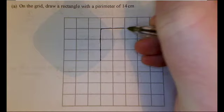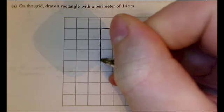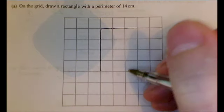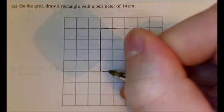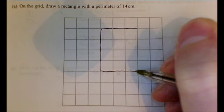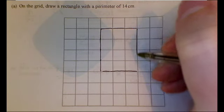So I'm drawing one and one each way, and that's 6. Now if I draw one more, now I've got a 4 and a 3, which makes 7. So if I just make that into a rectangle, it should have a perimeter of 14.